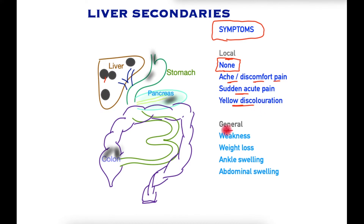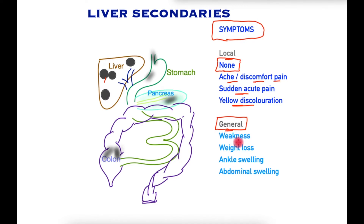In terms of general symptoms, because liver spread denotes cancer that has progressed, patients will have general symptoms such as weakness, lethargy, weight loss, and loss of appetite.